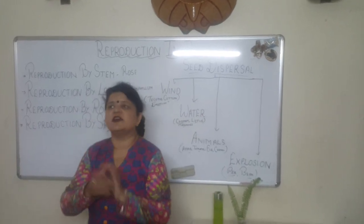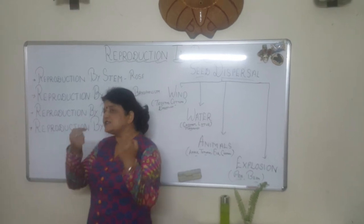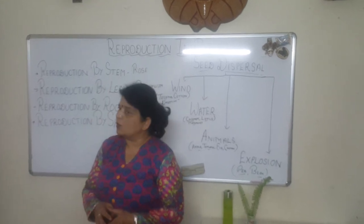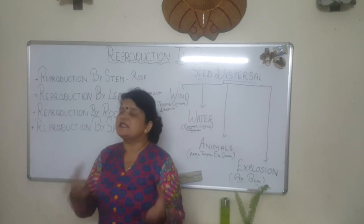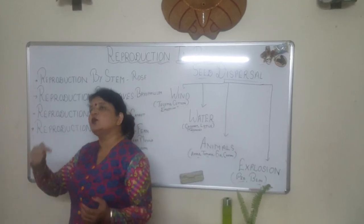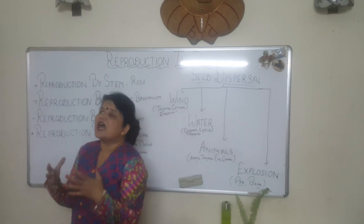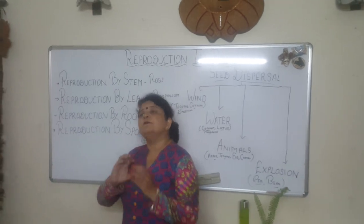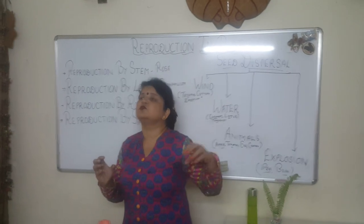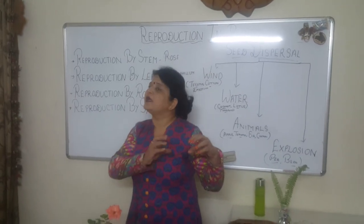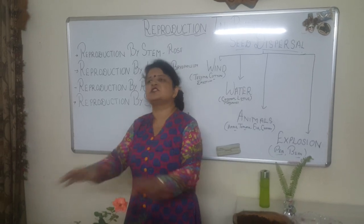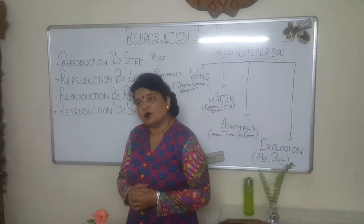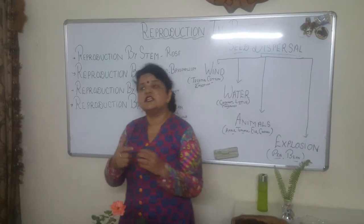Some seeds have a hard cover. If these seeds fall directly on the soil, they may face problems germinating. At times, birds come and eat these seeds. The seeds travel to the bird's stomach where acids dissolve the outer shell, softening the seed. As it travels through the bird's gut, the outer cover becomes soft, and when the bird passes it out, the moment it falls on the ground it starts germinating easily.